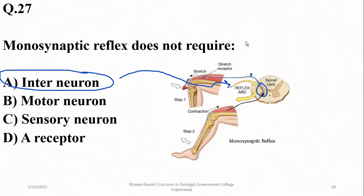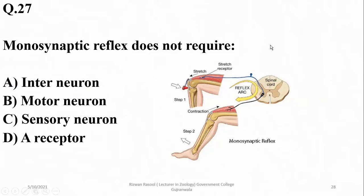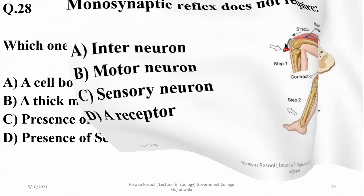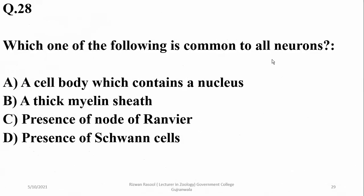Question 28: which of the following is common to all neurons? All neurons must have a cell body containing a nucleus. The presence of myelin sheath, nodes of Ranvier, or Schwann cells is not a vital component of all neurons.